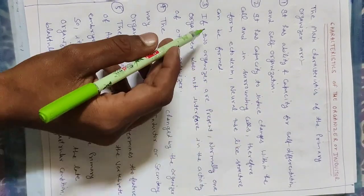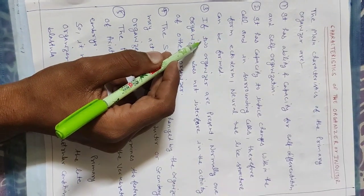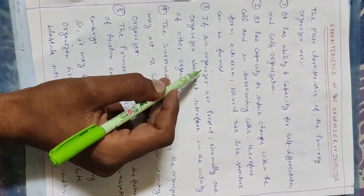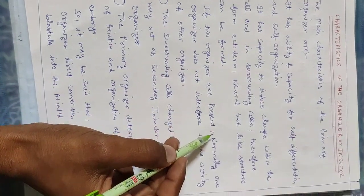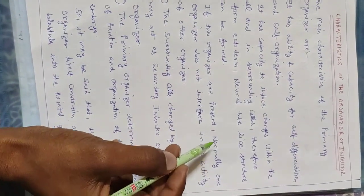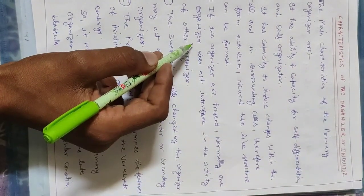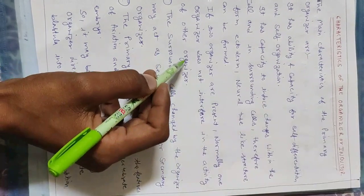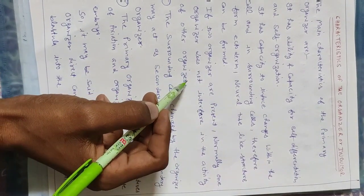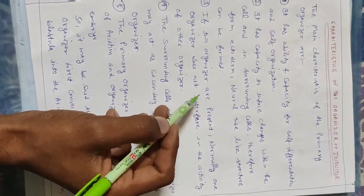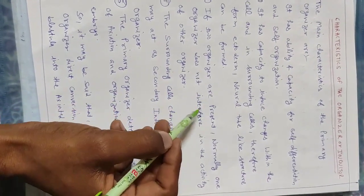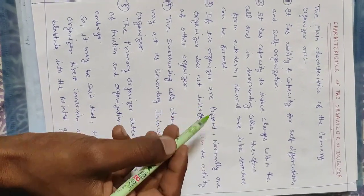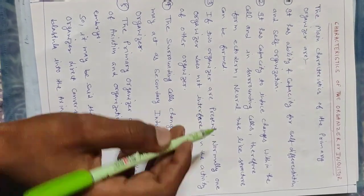The third characteristic of the organizers is that if two organizers are present, normally one organizer does not interfere in the activity of the other organizer. If there are two organizers present, then one organizer will not interfere with the other organizer.